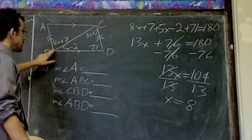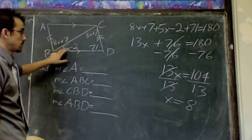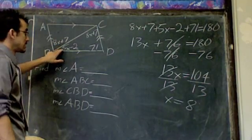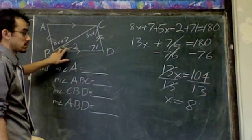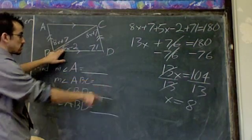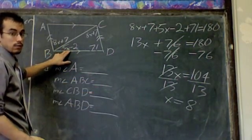This angle here, DBC, this one, because we care about where the vertex is, DBC is 5 times x minus 2. Well, x is 8. So 5 times 8 is 40.